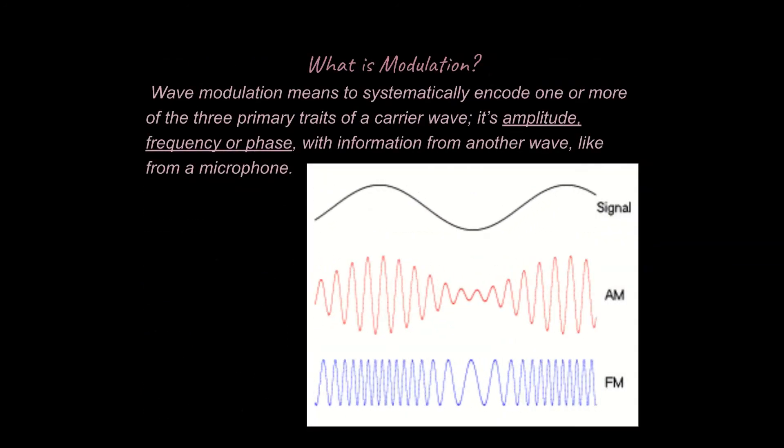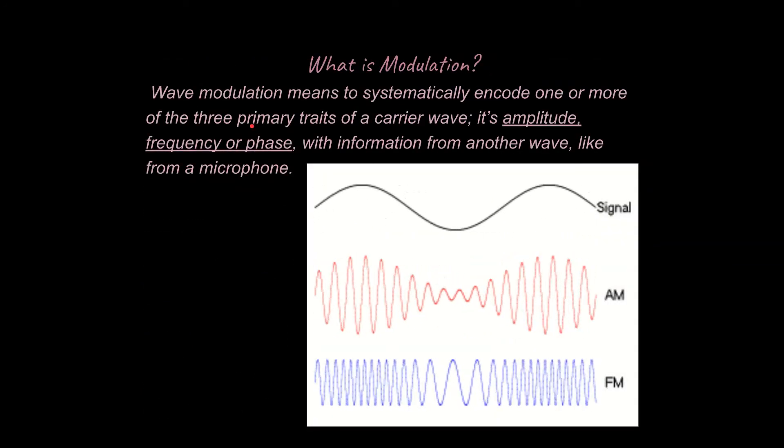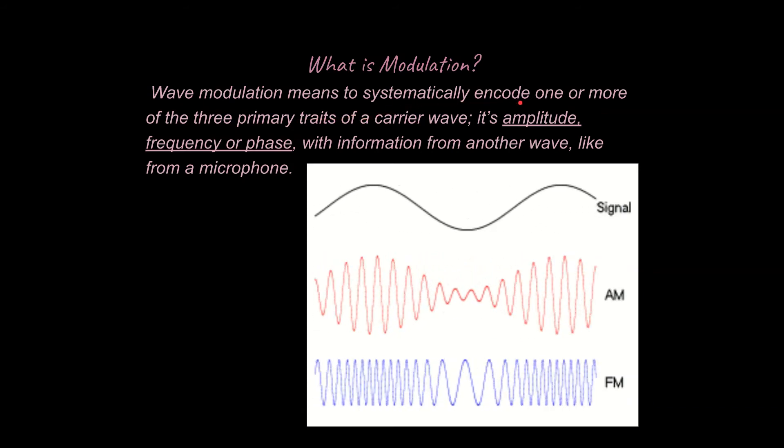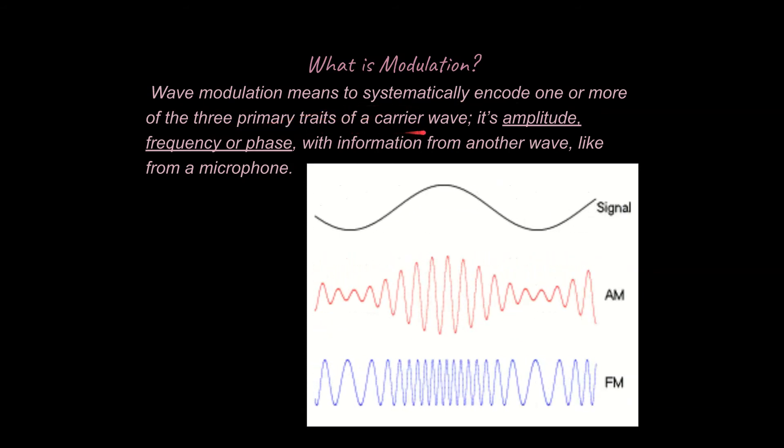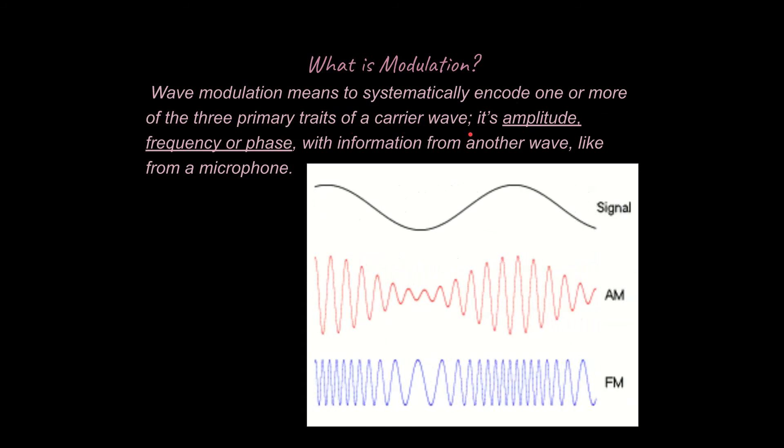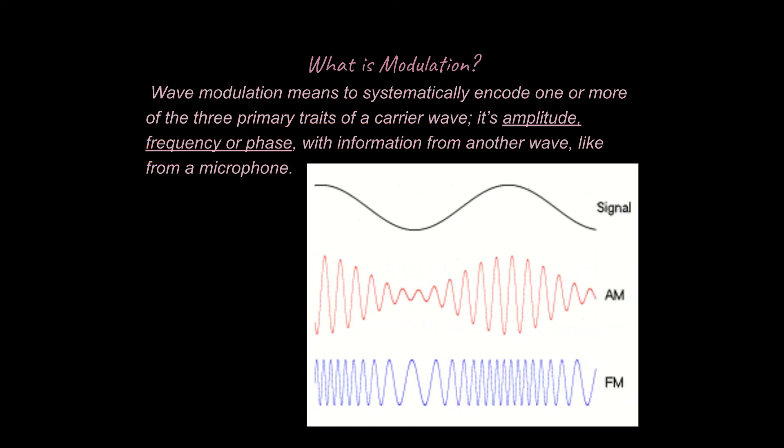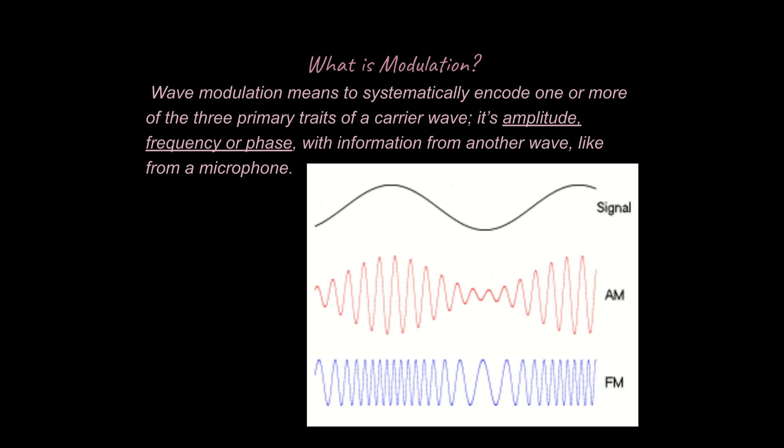So first of all, what is modulation? Well, what modulation is, is it means to systematically encode one or more of the three primary traits of a carrier wave. So it's amplitude, frequency, or phase with information from another wave, like from a microphone.